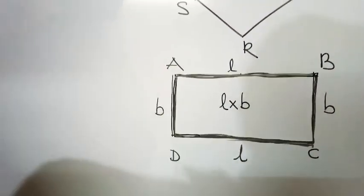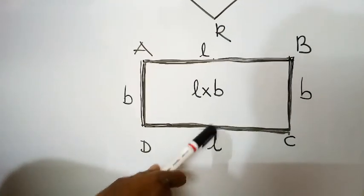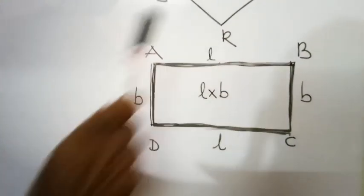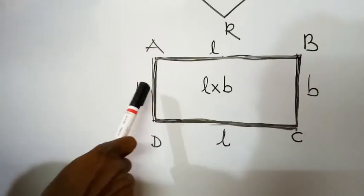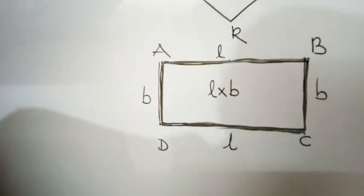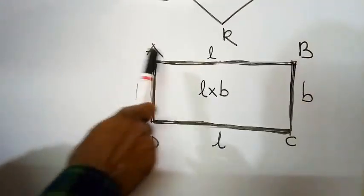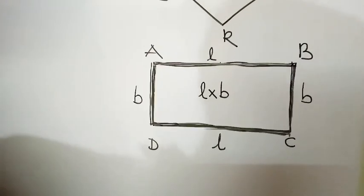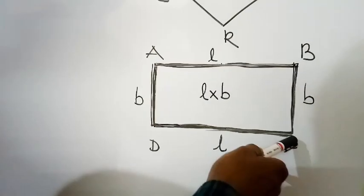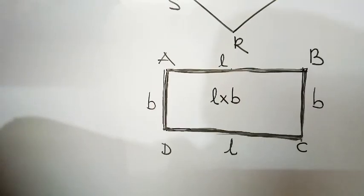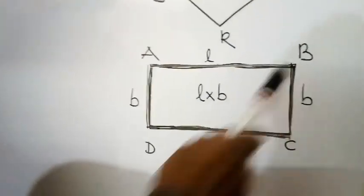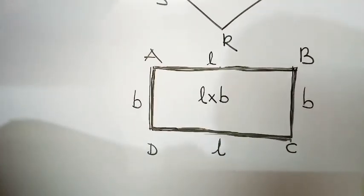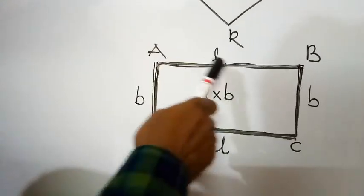What is the area of this? Length into breadth — which is the area of a rectangle. In a rectangle, opposite sides are equal — pair of opposite sides are equal in length. It has two independent measurements: length and breadth. These two are called dimensions, therefore a rectangle is a two-dimensional shape in geometry.